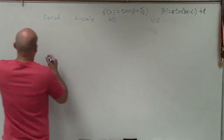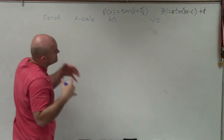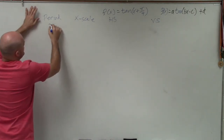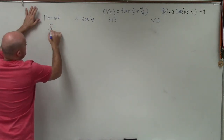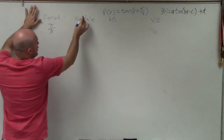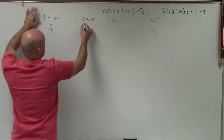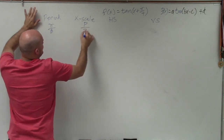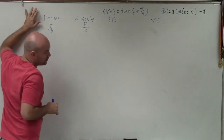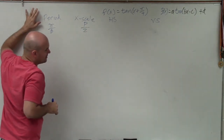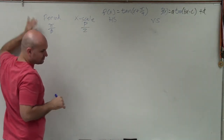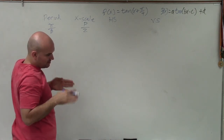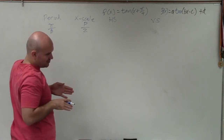The period, instead of being 2π divided by B, is just going to be π divided by B. For the x scale, I like to take my period and divide it by 2 — that is period divided by 2.